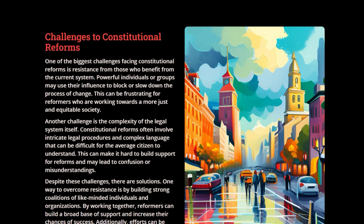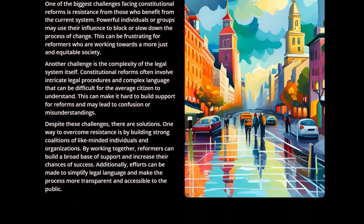Despite these challenges, there are solutions. One way to overcome resistance is by building strong coalitions with like-minded individuals and organizations. By working together, reformers can build a broader base of support and increase their chances of success. Additionally, efforts can be made to simplify legal language and make the process more transparent and accessible to the public.